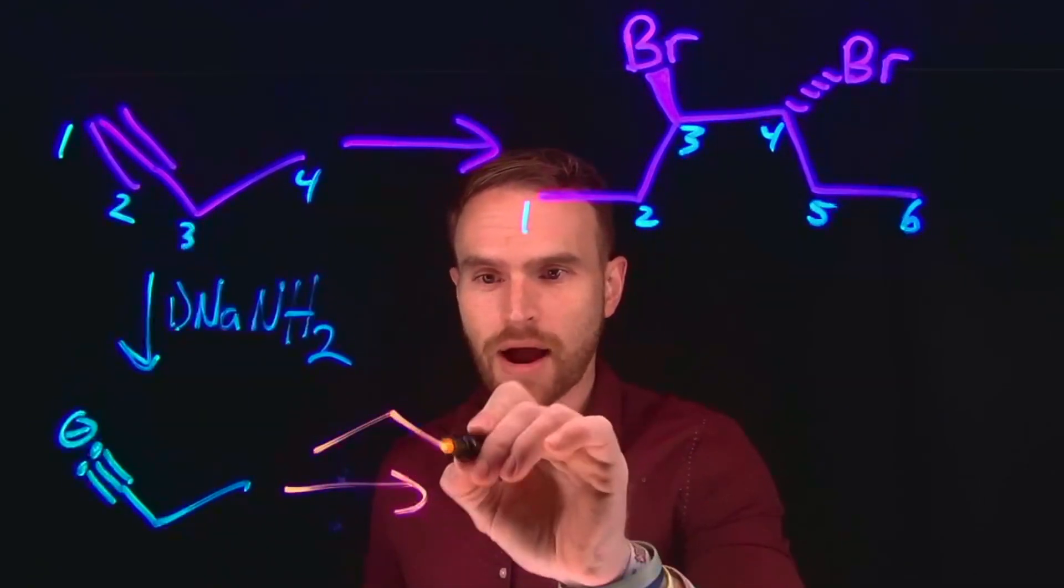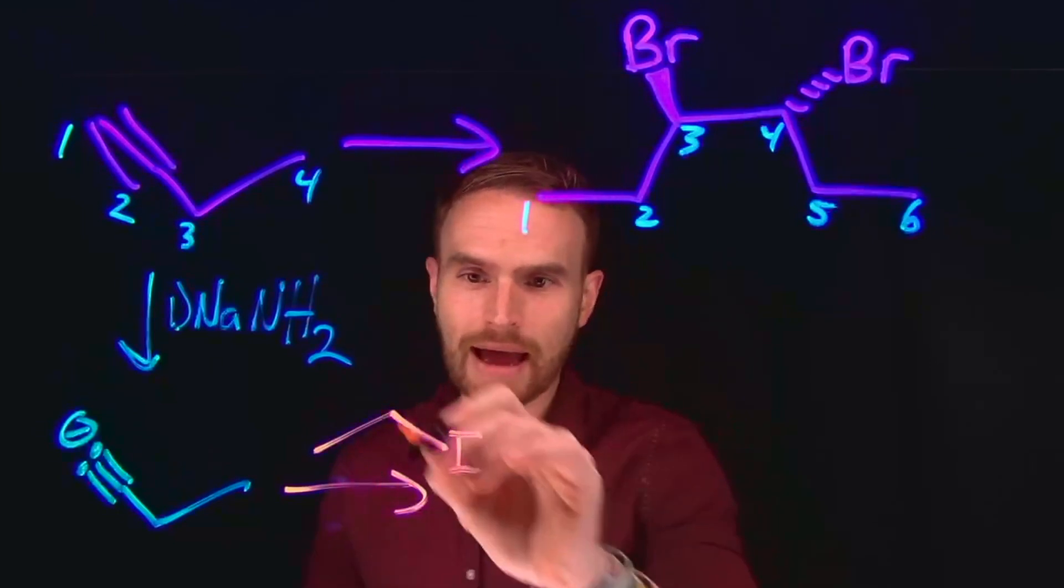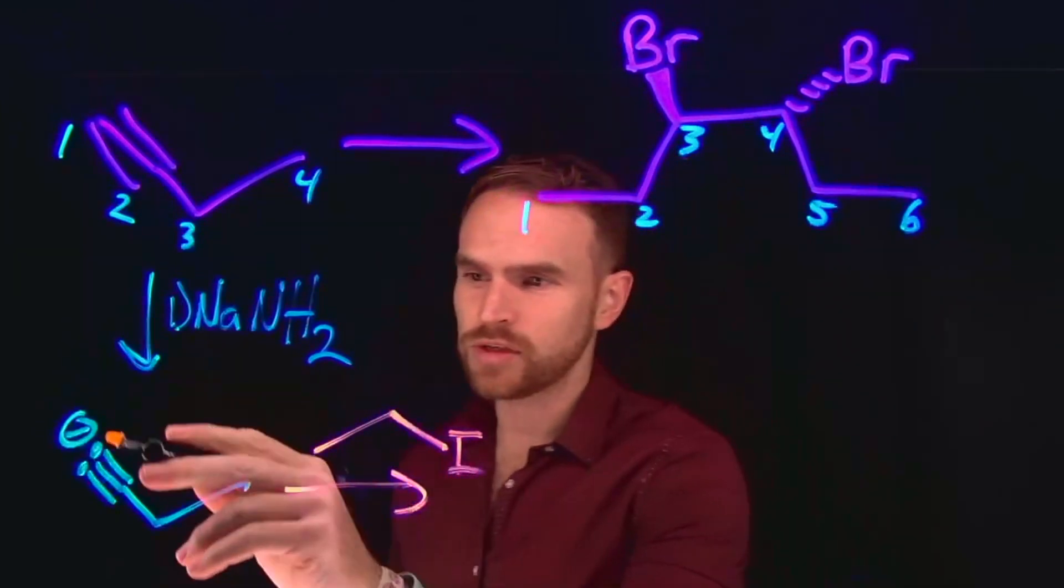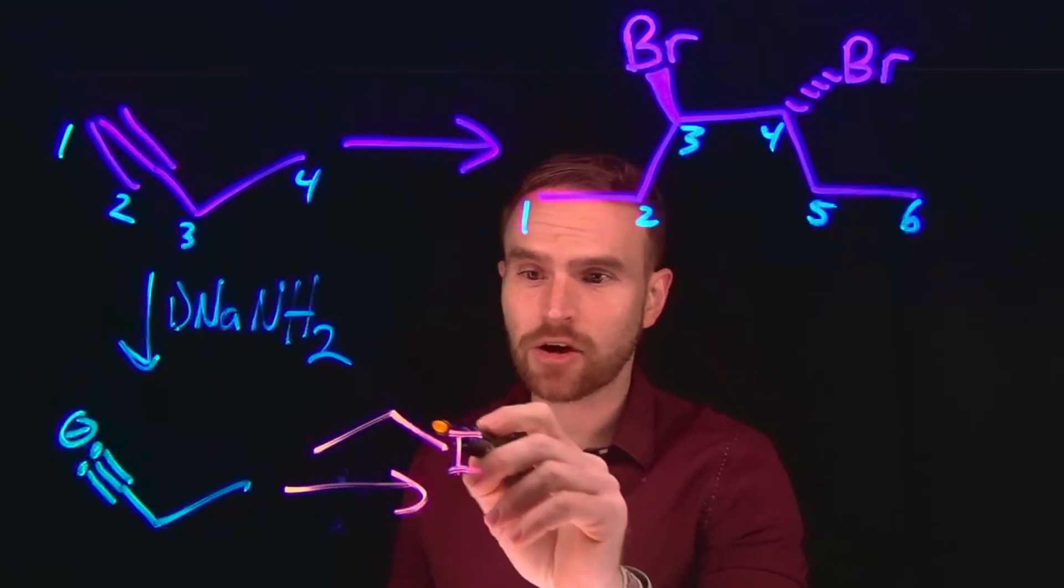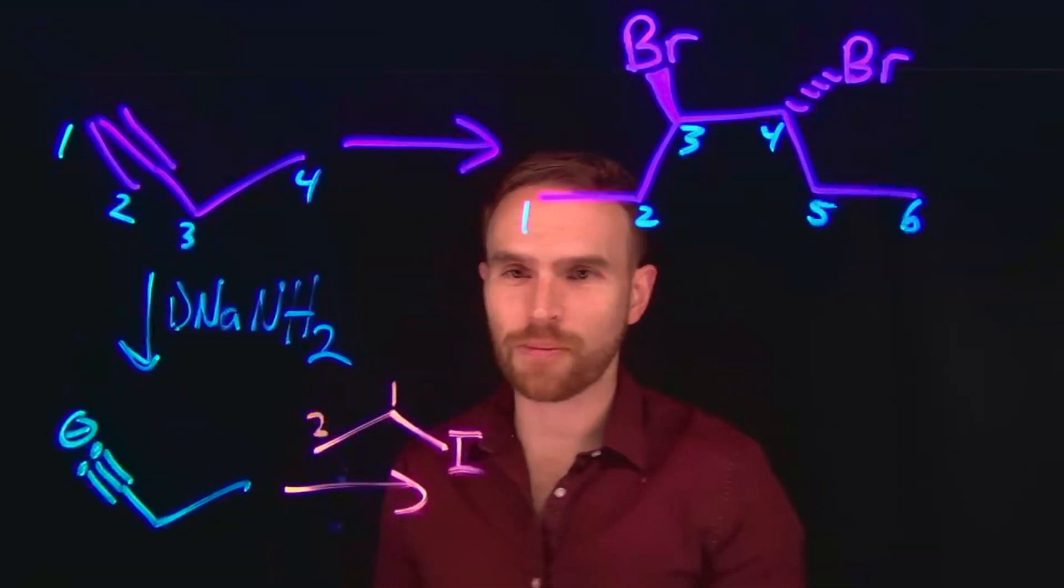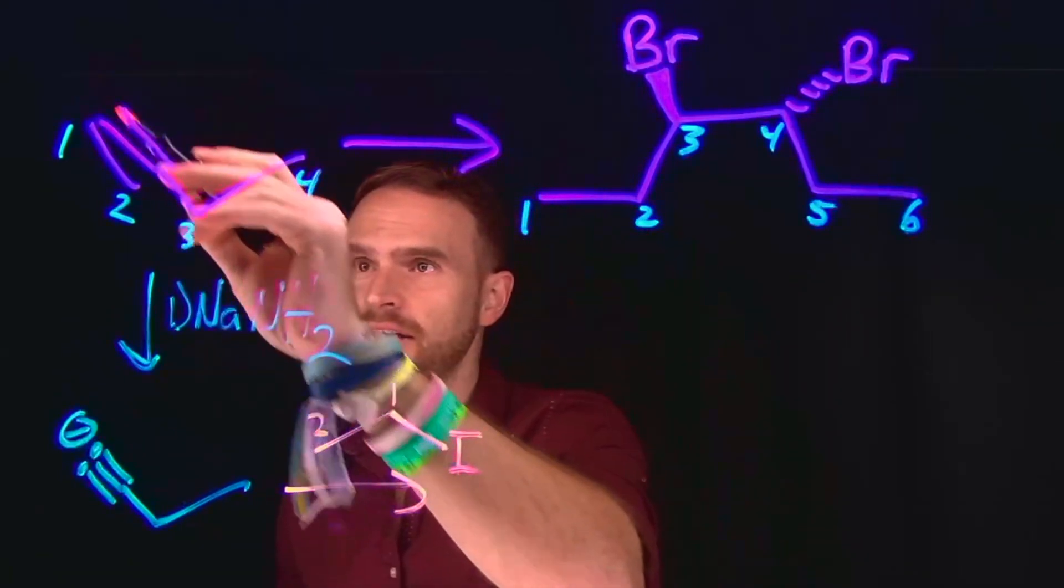So therefore, this would be the product of that transformation. And then we can do an alkylation reaction by introducing a primary alkane alkyl halide. So this is going to do the substitution reaction to extend the carbon chain by one, two carbons, which is what we need on this side of the alkyne.